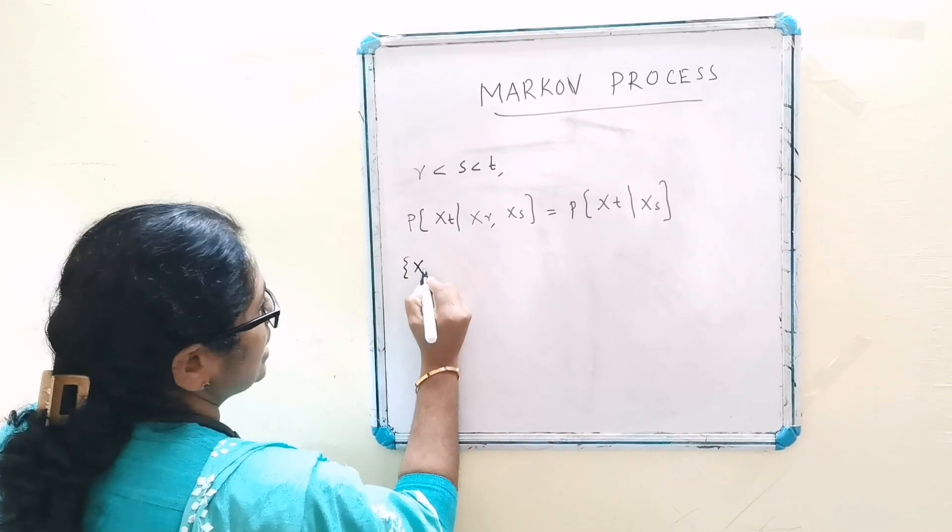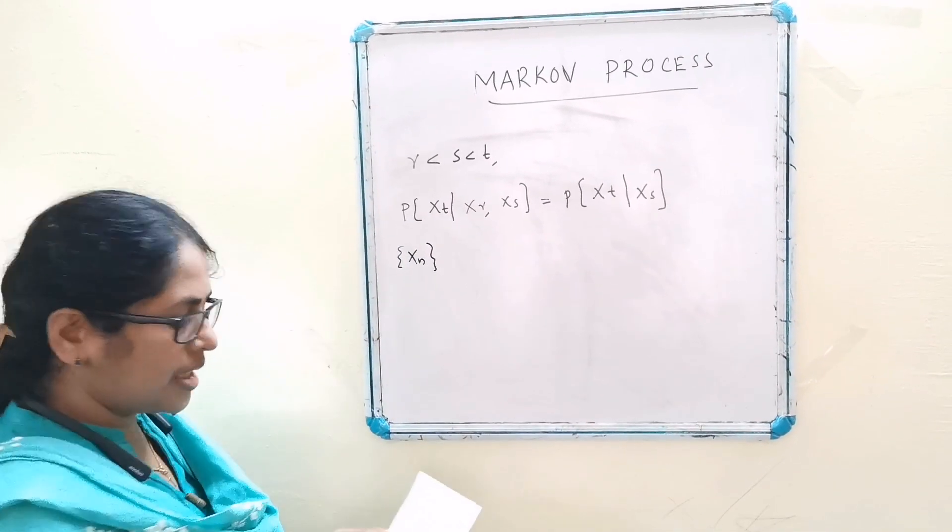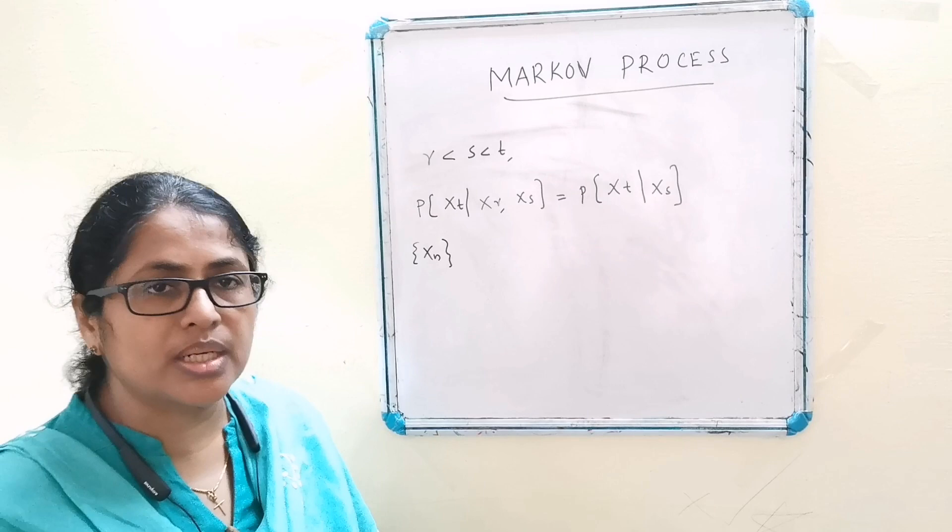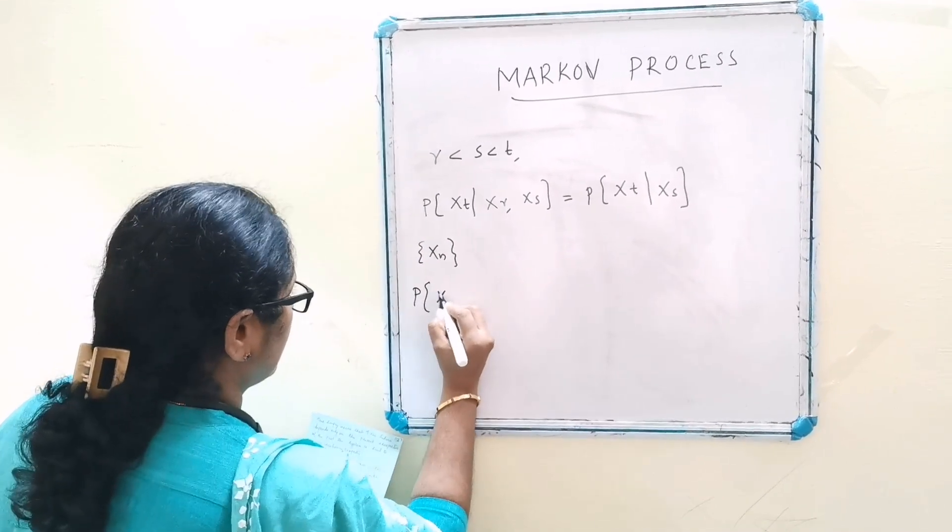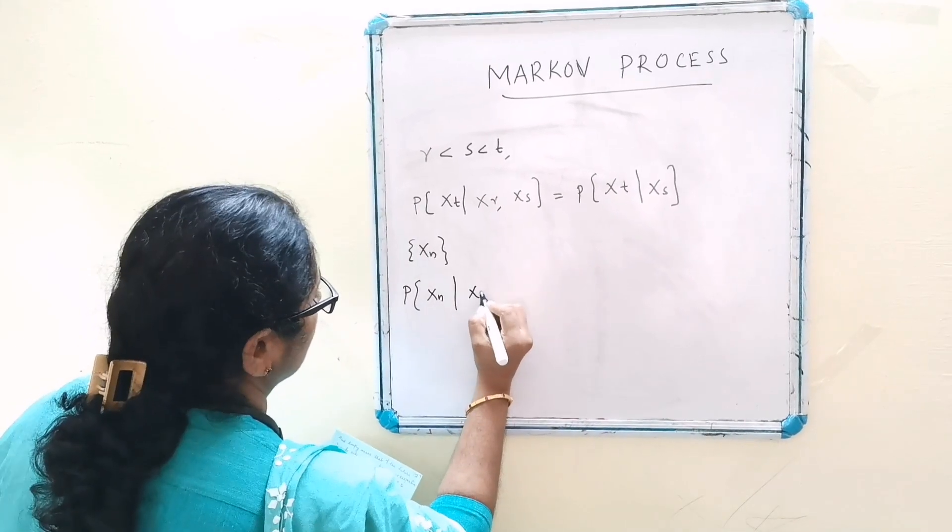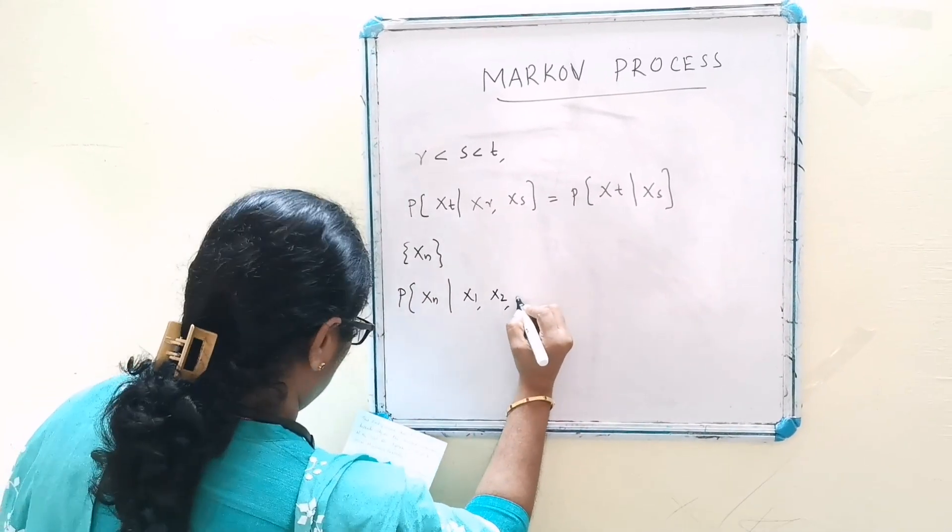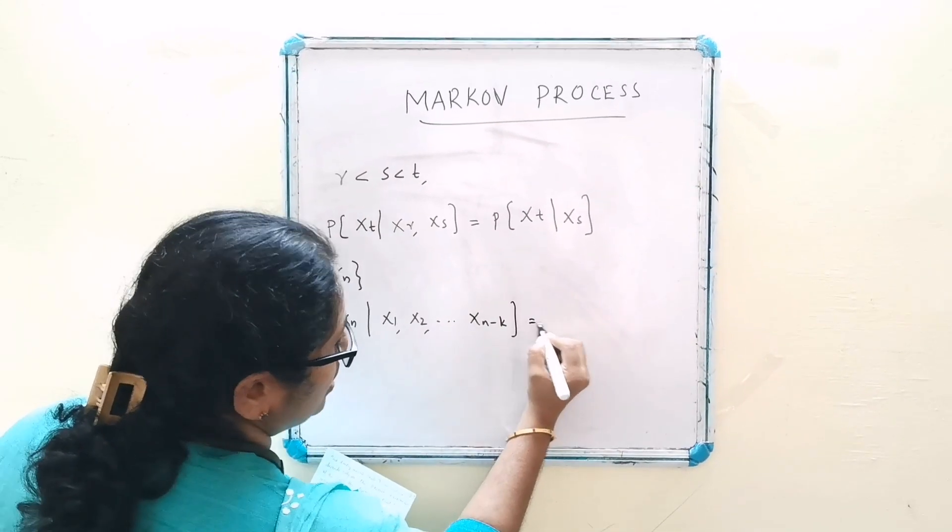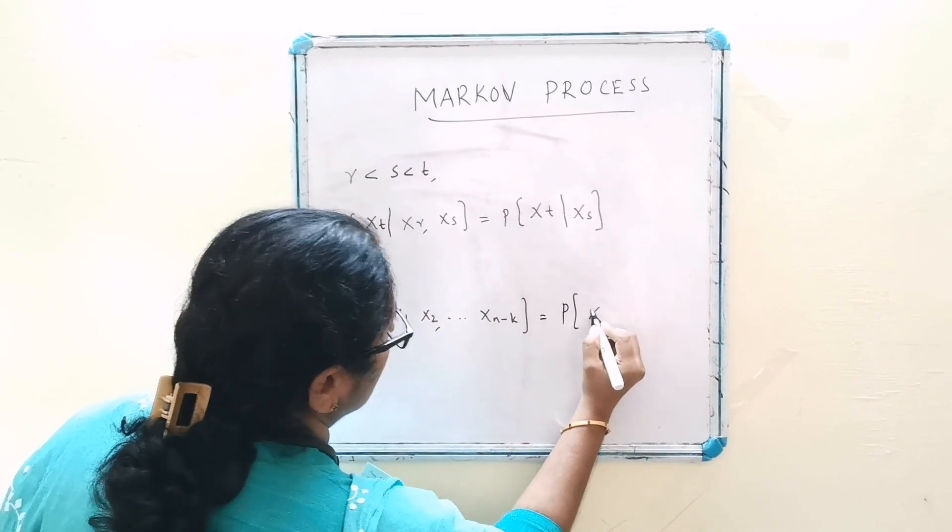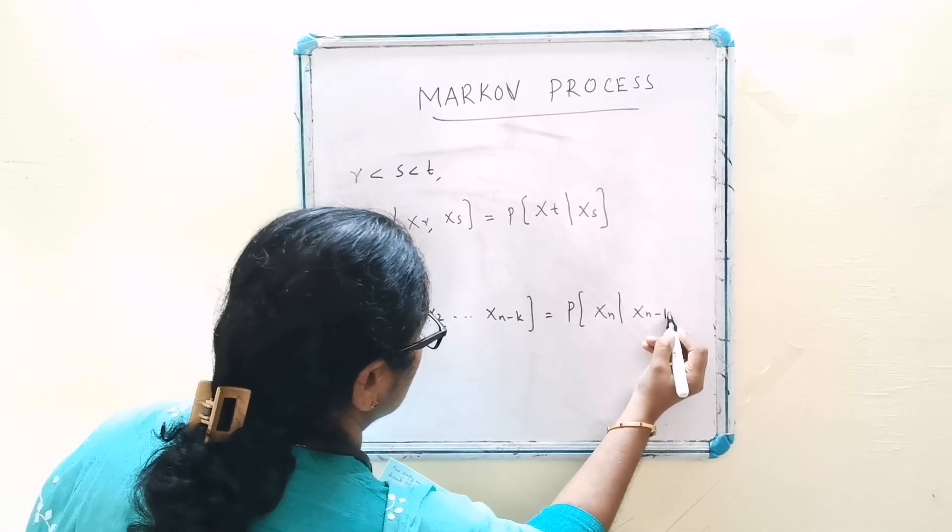In probabilistic terms, a process sequence xn is said to have a Markov dependence of order k if probability of xn given x1, x2, etc., xn-k is equal to probability of xn given xn-k.